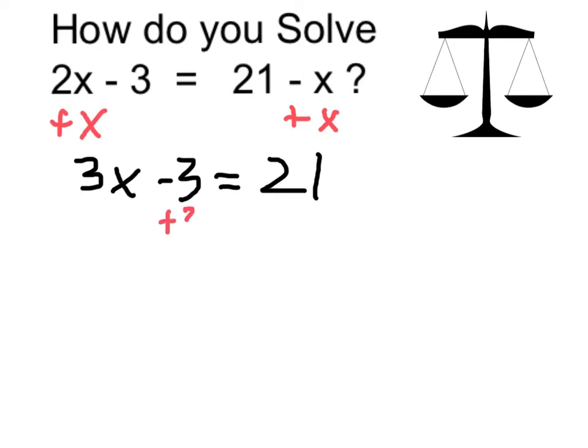Now I can add 3 on the left to get rid of the minus 3, and to balance it, I'm going to add 3 on the right as well.